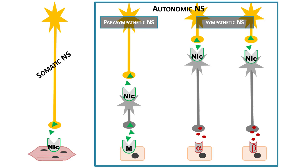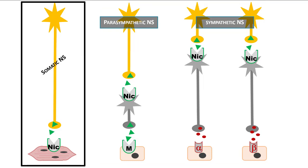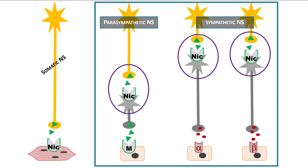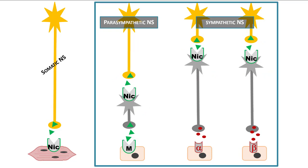Here we see the peripheral nervous system pathways for the somatic and autonomic portions, including neurotransmitters and their specific receptors. For voluntary skeletal muscles of the somatic nervous system, acetylcholine binds to a nicotinic receptor on the muscle surface to stimulate contraction. For the two-step pathway of the autonomic nervous system, the pre-ganglionic neuron coming off the brainstem or spinal cord releases acetylcholine — shown as green triangles — onto a nicotinic receptor. This is the same whether it's parasympathetic or sympathetic: that first yellow neuron will always release acetylcholine and it will always bind to a nicotinic receptor.